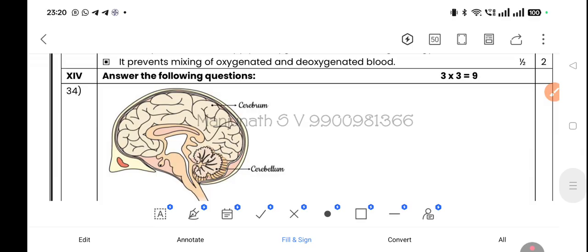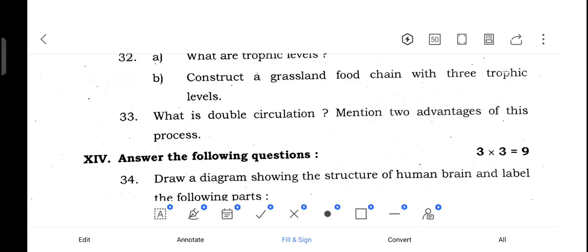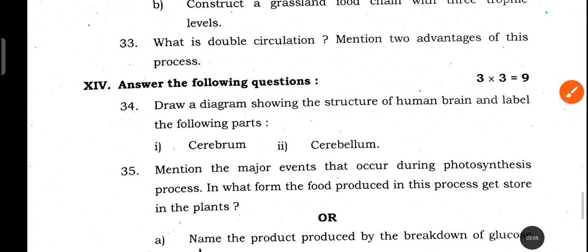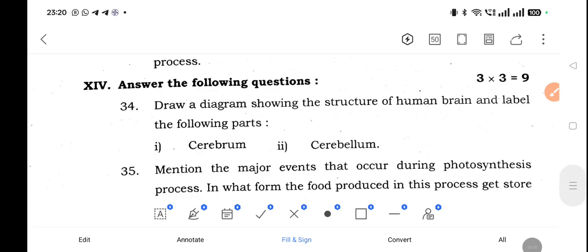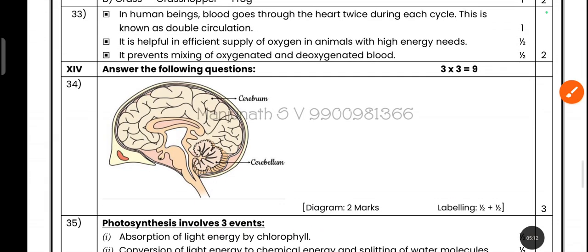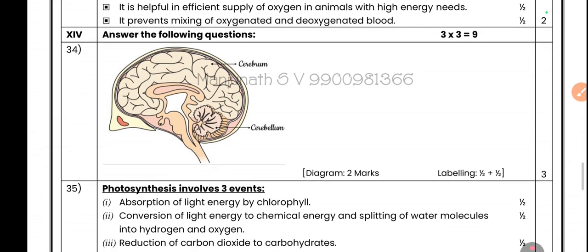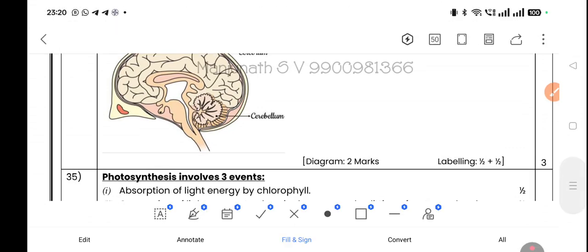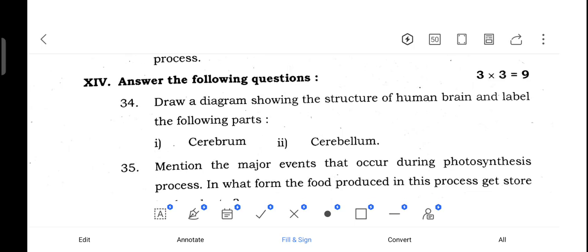Question 33: What is double circulation? Mention two advantages. In human beings, blood goes through the heart twice during each cycle — this is known as double circulation. Advantages: it ensures efficient supply of oxygen in animals with high energy needs, and it prevents mixing of oxygenated and deoxygenated blood.